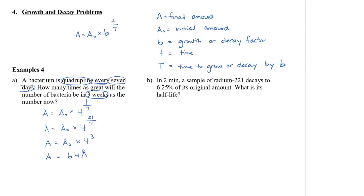We can now see that A is equal to 64 times A naught, which means that the final amount will be 64 times the original amount after three weeks.